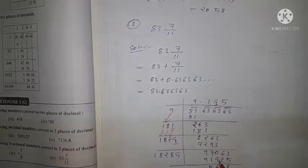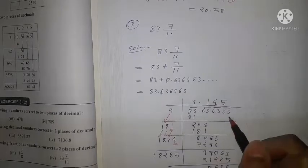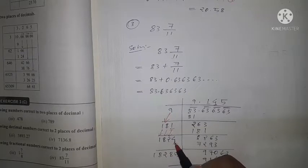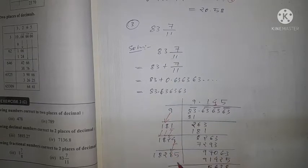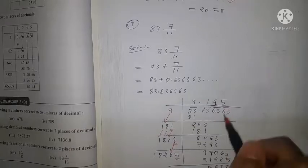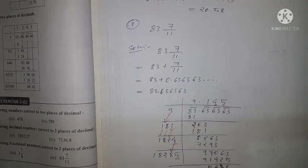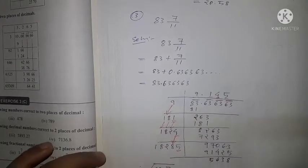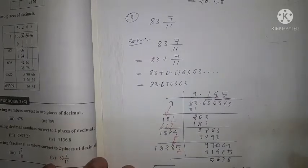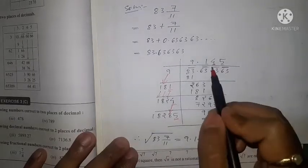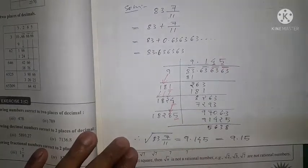The remainder is 9770, and the next 63 comes down. The 1 comes as it is, 8 comes as it is, 2 comes as it is, and 4 is doubled to 8, giving divisor 18285. So 18285 × 5 = 91425, and the remainder is 5638. Therefore the square root of 83 7/11 is 9.145, continuing up to three decimal places.